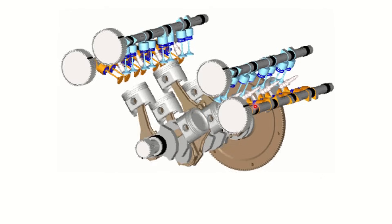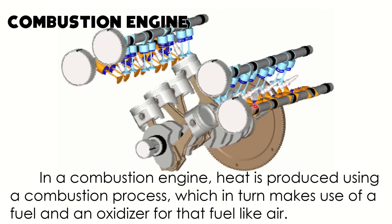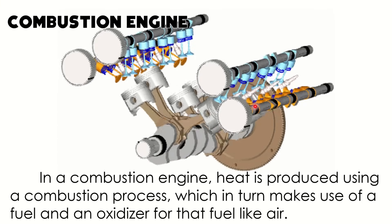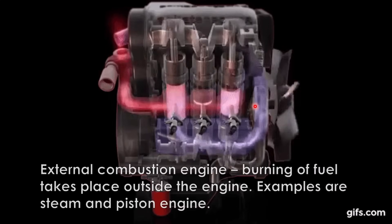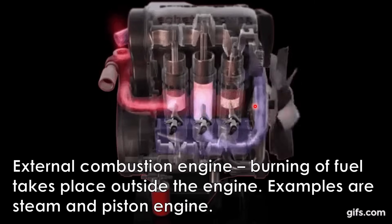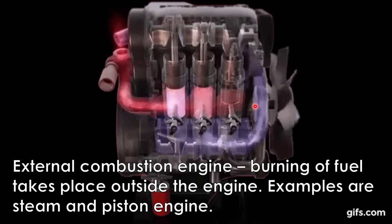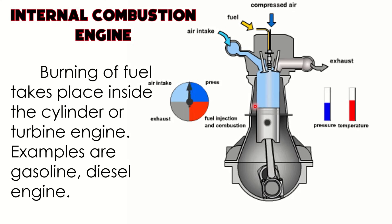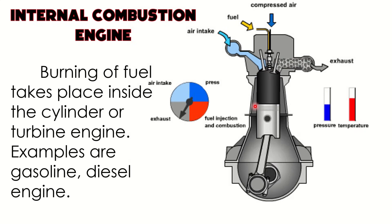A common type of heat engine is called a combustion engine. In a combustion engine, heat is produced using a combustion process which makes use of a fuel and an oxidizer for that fuel, like air. There are two classes of combustion engines. The first is the external combustion engine, where burning of fuel takes place outside the engine — examples are steam and piston engines. The second is the internal combustion engine, where burning of fuel takes place inside the cylinder or turbine engine — examples are gasoline or diesel engines.